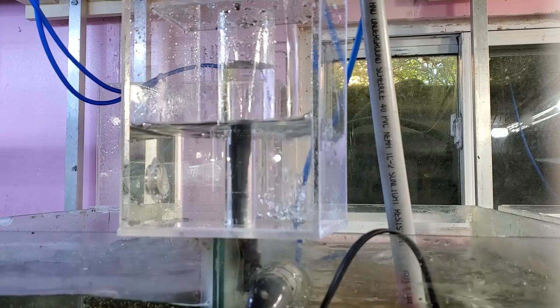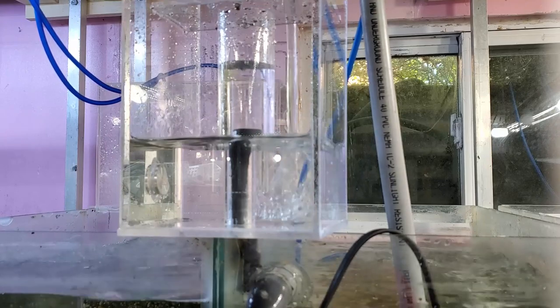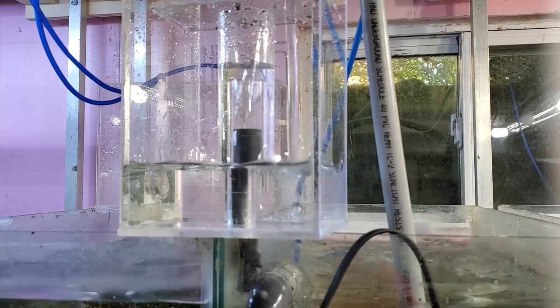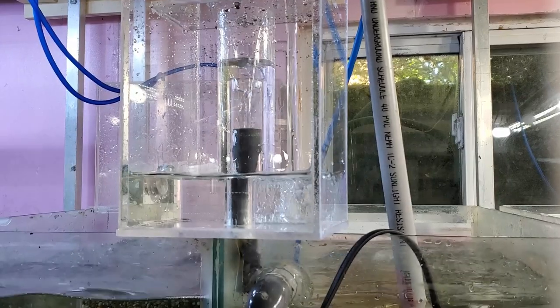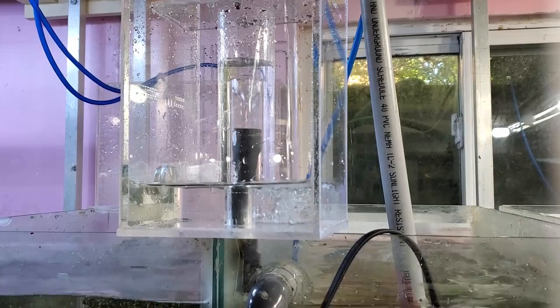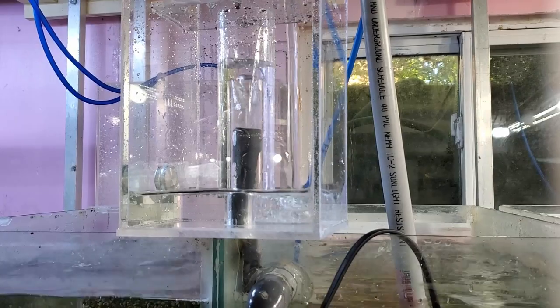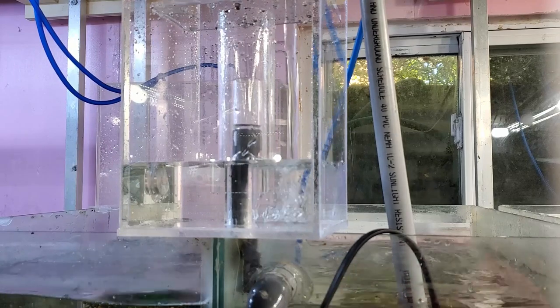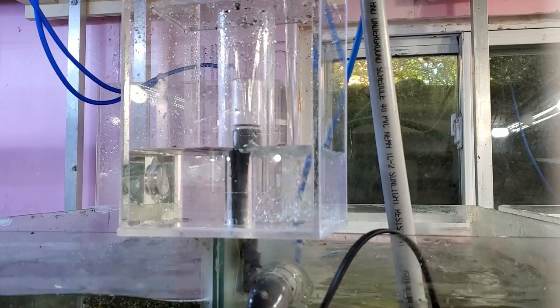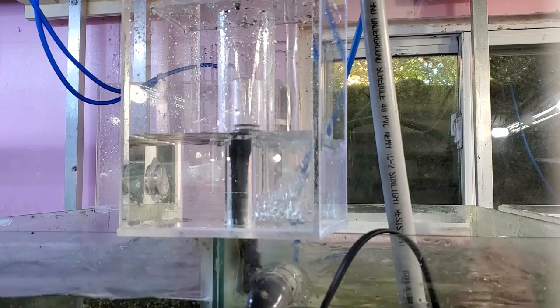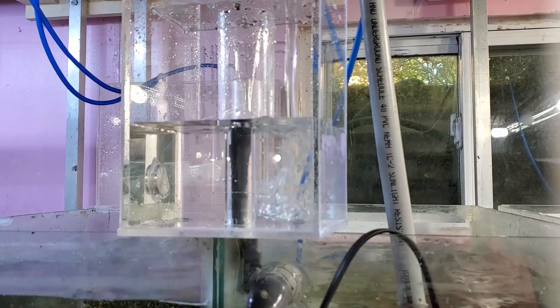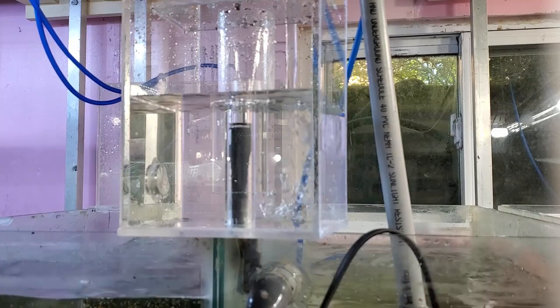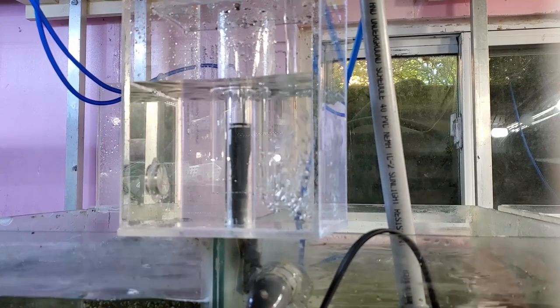To restrict the rate at which it drains, I've inserted a piece of schedule 80 half inch PVC which I've turned down to fit the inside diameter of the acrylic pipe. Now I get a really nice fill and purge cycle - it's nice and smooth, it's reliable. I let this run for quite some time and never had any issues with it.